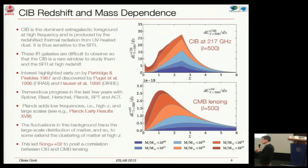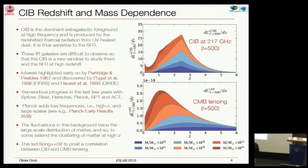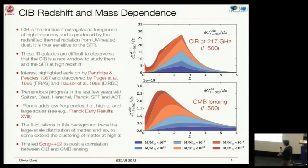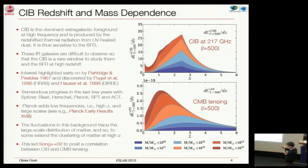Since I'm actually the first one to talk about the CIB, I will give a little more detail. The motivation to study the CIB is the fact that it's a dominant extragalactic foreground at most frequencies above 217 GHz at small scales. But it's also interesting by itself because it's produced by star-forming galaxies which are UV bright—the stars absorb dust and re-emit radiation in the infrared. So the CIB itself is a very good proxy to study the star formation history of the universe.